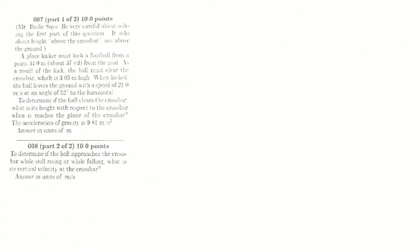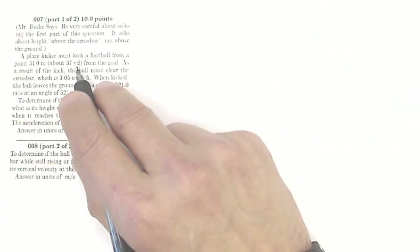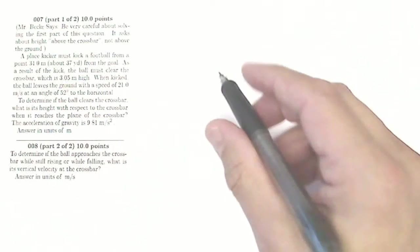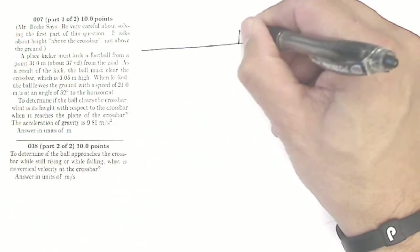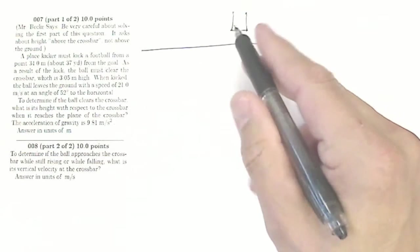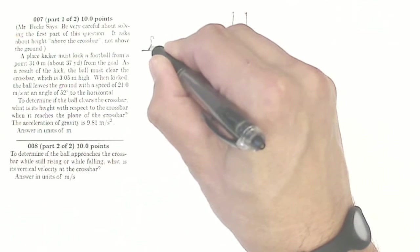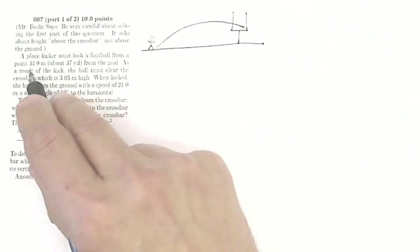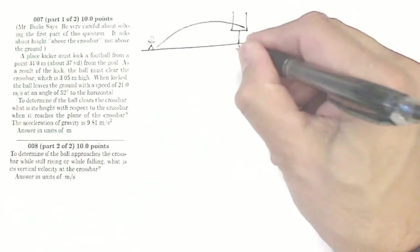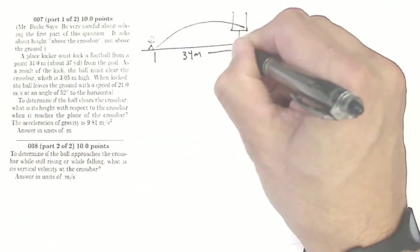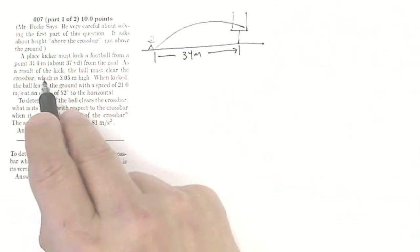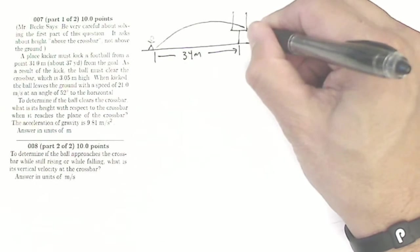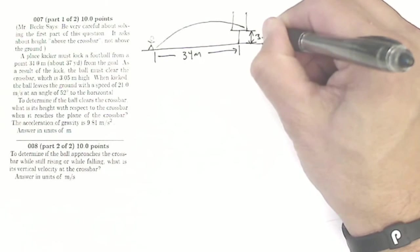This is a tricky question in the wording, so let's figure out what it's asking. It says: a place kicker must kick a football from a point 34 meters from the goal. So we have a crossbar like a football goal post, and the kicker is going to kick the ball. He's 34 meters from the goal, so this horizontal distance is 34 meters. As a result of the kick, the ball must clear the crossbar, which is 3.05 meters high.